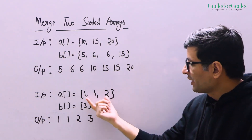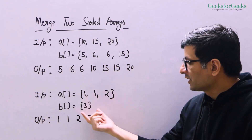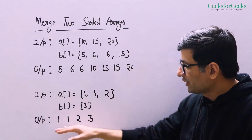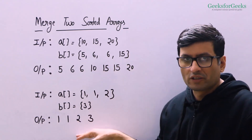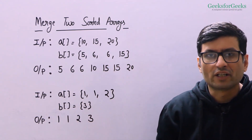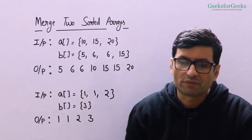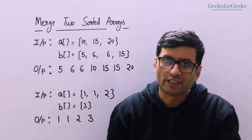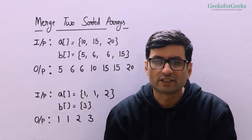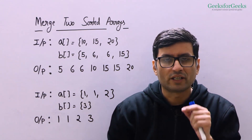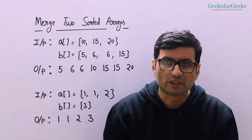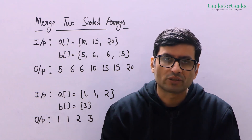In this example we have 1, 1, 2 and then 3, so we need to print all these four in sorted order. Now please pause this video and try to write down a function that takes two sorted arrays as input and prints all the elements of both the arrays in sorted order.